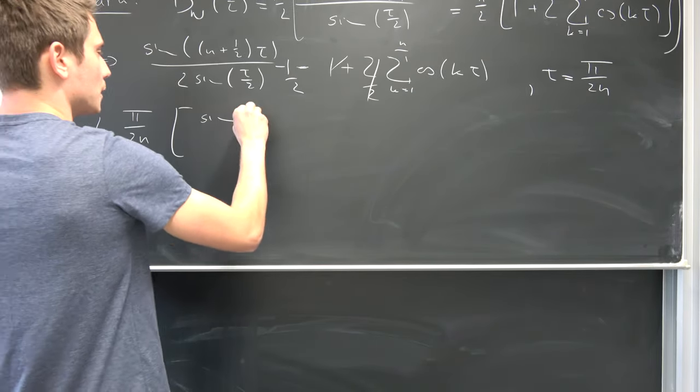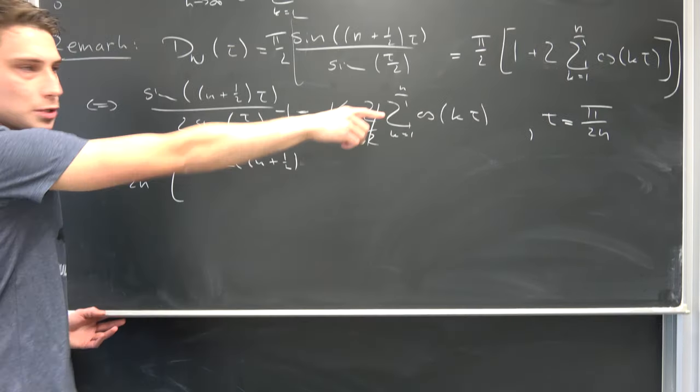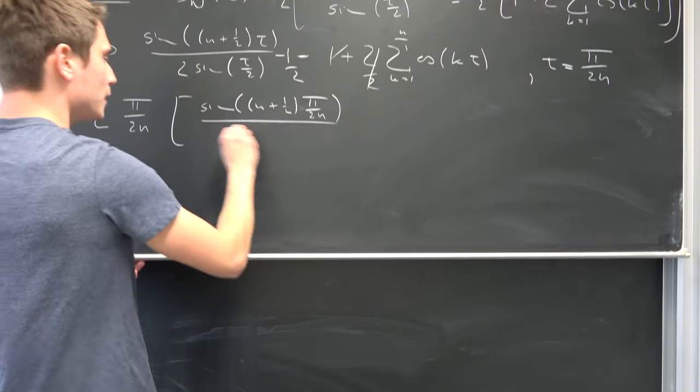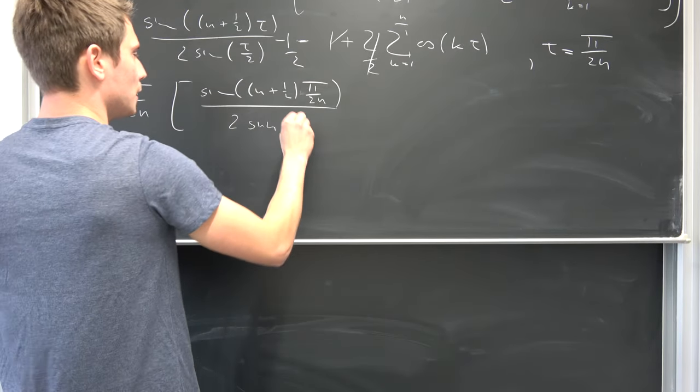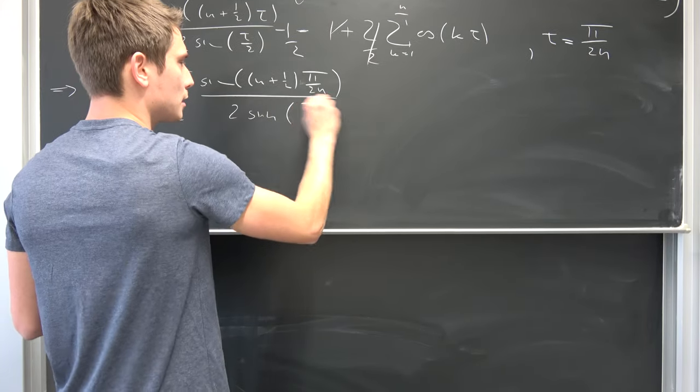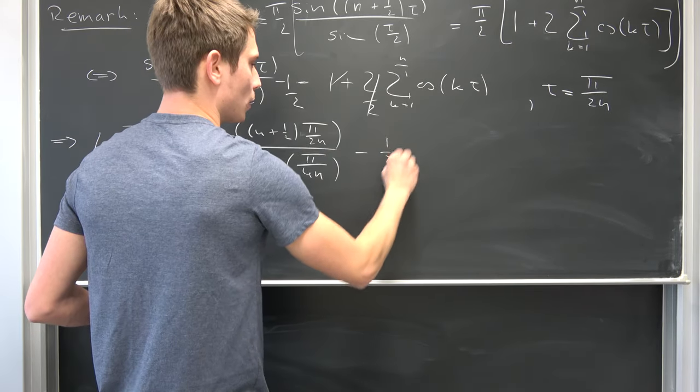So we have the sine of n plus 1 half times, our tau is now pi over 2 times n over 2 times the sine of tau over 2, which is going to give us pi over 4 times n, and then negative 1 half.